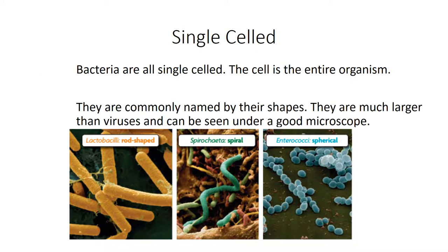All bacteria are single-celled; the single cell is the entire organism. They may be found in colonies, but they're all separate organisms. Bacteria are commonly named by their shape: rod-shaped, spiral-shaped, or spherical. They are much larger than viruses but smaller than animal and plant cells. They can just barely be seen under a visible microscope, while viruses require more powerful technology.